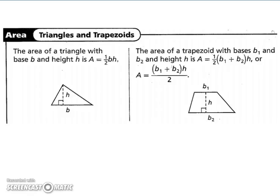Let's look at the area of triangles and trapezoids. The area of a triangle with base b and height h equals one-half times base times height. The area of a trapezoid is similar, but since you have two bases, you add both bases together, multiply that quantity by your height, and then divide by 2 — or equivalently, multiply by one-half.